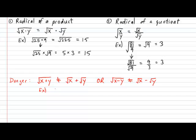Suppose I asked you to calculate √(25 + 9). I'll show you that this does NOT equal √25 + √9. On the left side: √(25 + 9) = √34 ≈ 5.83. On the right side: √25 + √9 = 5 + 3 = 8. As you can see, both sides are not equal to each other — 5.83 ≠ 8.